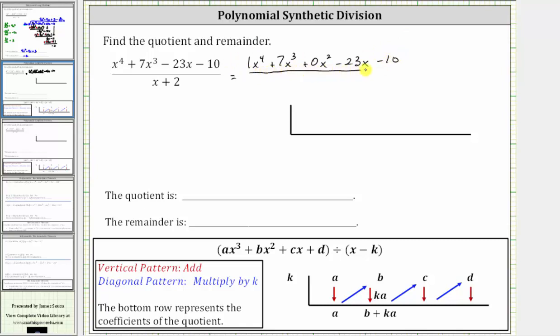And the divisor is x plus two. If we had to write x plus two using subtraction, we need to recognize that x plus two is equivalent to x minus negative two, which means k is going to be negative two.